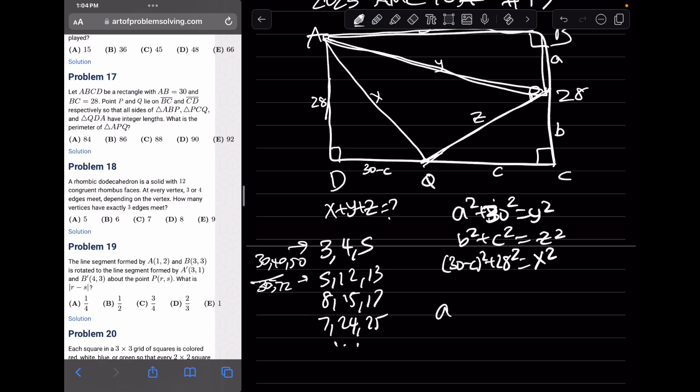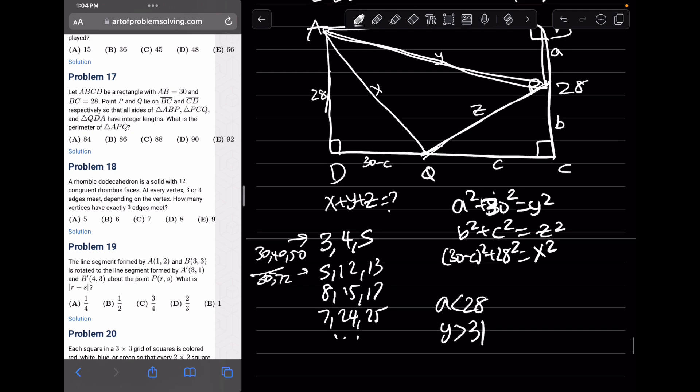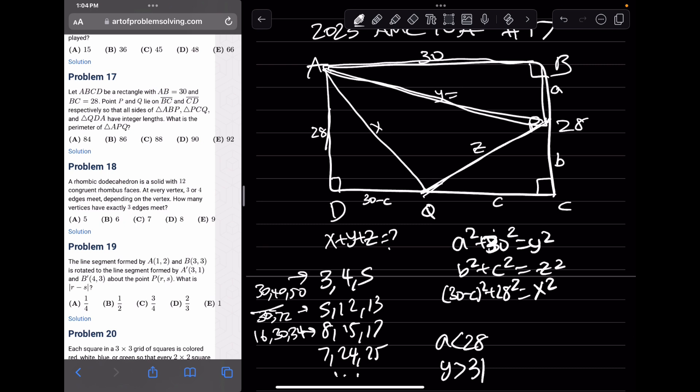And since we know that A has to be less than 28, and Y has to be greater than 31. About 30, let's try this one right here. So that's 16, 30, 34. Oh, this might work. So we could let Y equals 34, and we could let A equals 16.